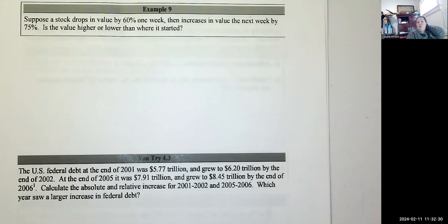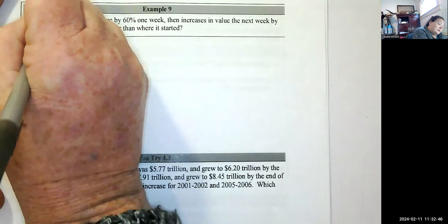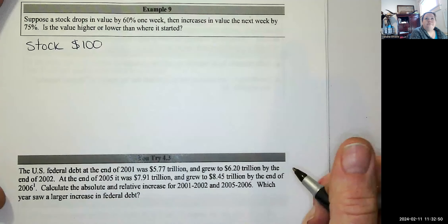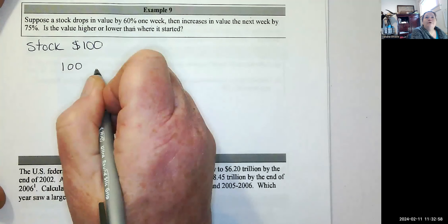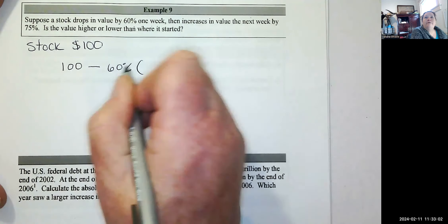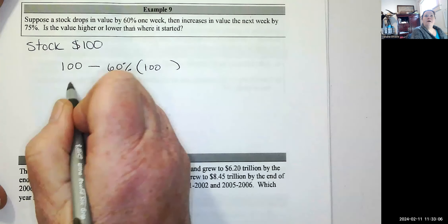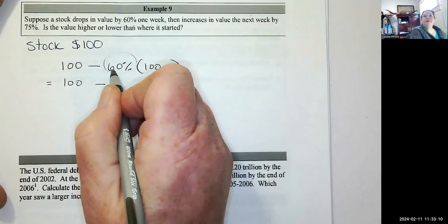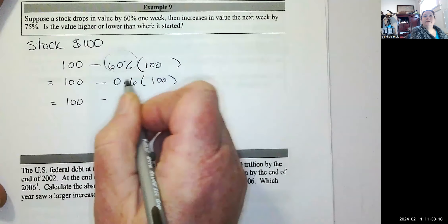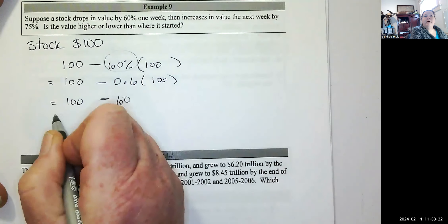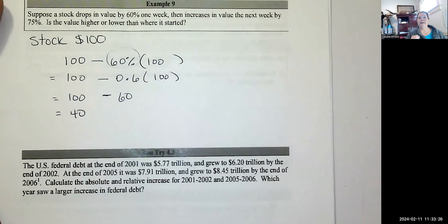Suppose a stock drops in value 60% in one week, then increases in value the next week by 75%. Is the value higher or lower than where it started? The only way to check is to use a concrete example. Say I bought a stock for $100. If it drops by 60%, that's $100 minus 60% of $100. Converting 60% to a decimal gives 0.60, so $100 minus $60 equals $40. The stock value after the first week is $40.